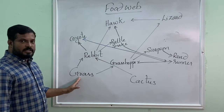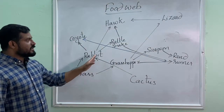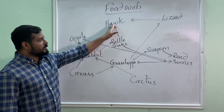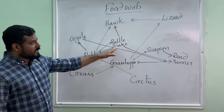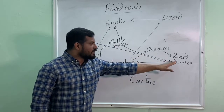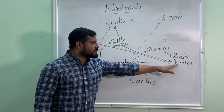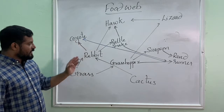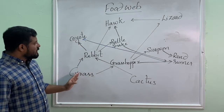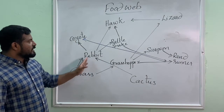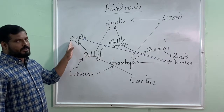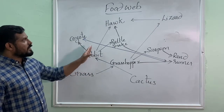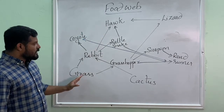Grass, rabbit consumed by rattlesnake, hawk. This rattlesnake is consumed by roadrunner. Then this roadrunner is consumed by coyote. Grass, rabbit, coyote. Grass, rabbit, hawk.